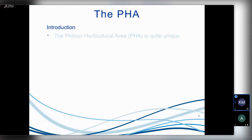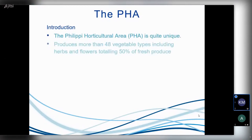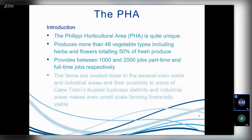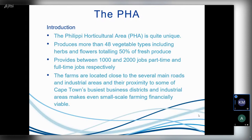Let me begin by introducing the case study area — the PHA, the Philippi horticultural area. It is a very unique part of Cape Town. It produces more than 48 vegetable types, so there's lots of farming going on in that area, including herbs and flowers. 50% of the fresh produce consumed in Cape Town comes from this PHA area, and we estimate it produces between 1,000 and 2,000 jobs, some part-time and many full-time.